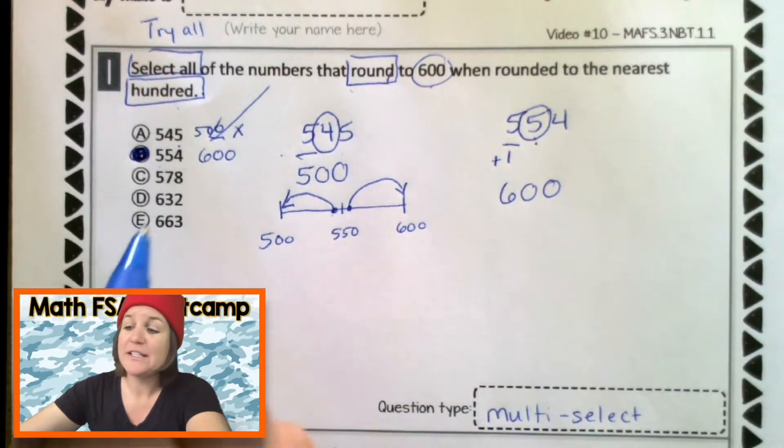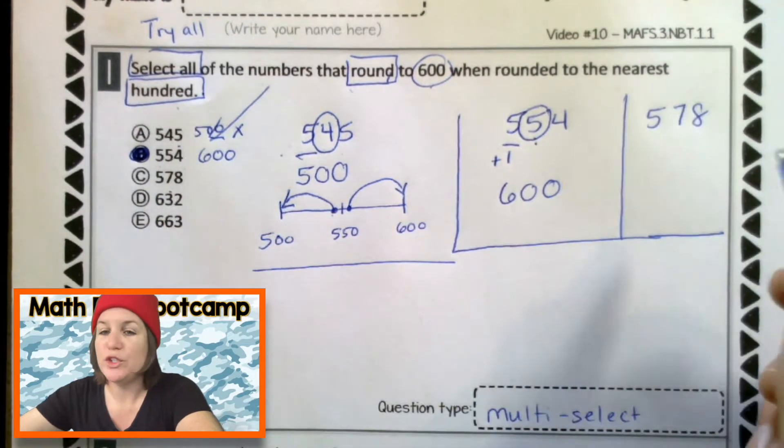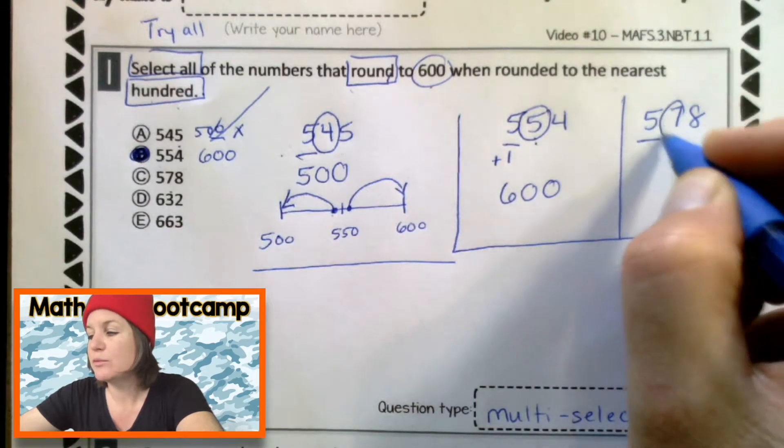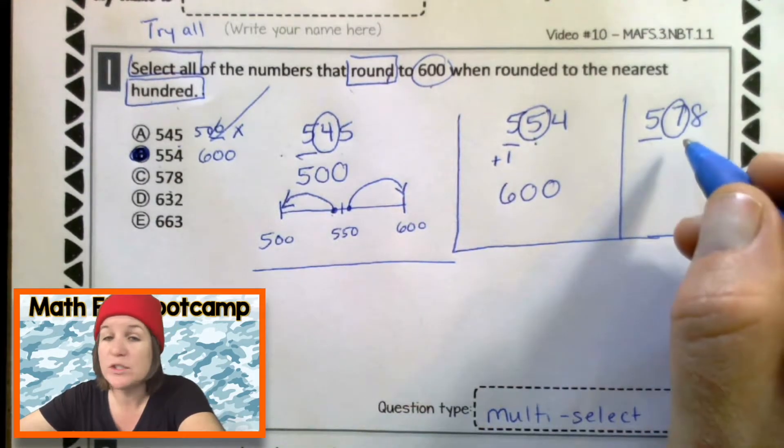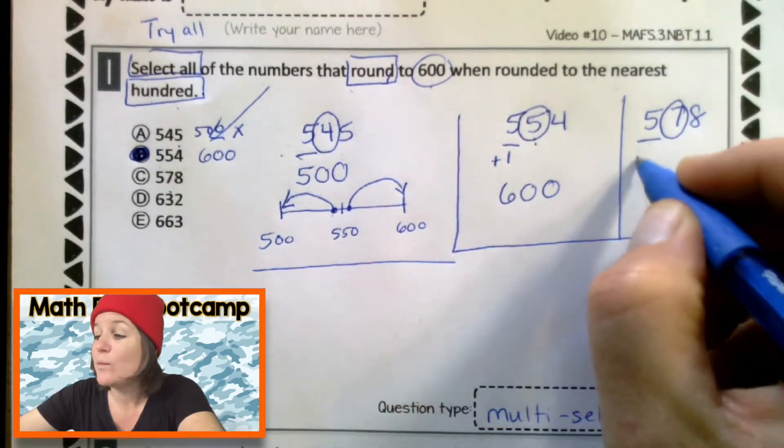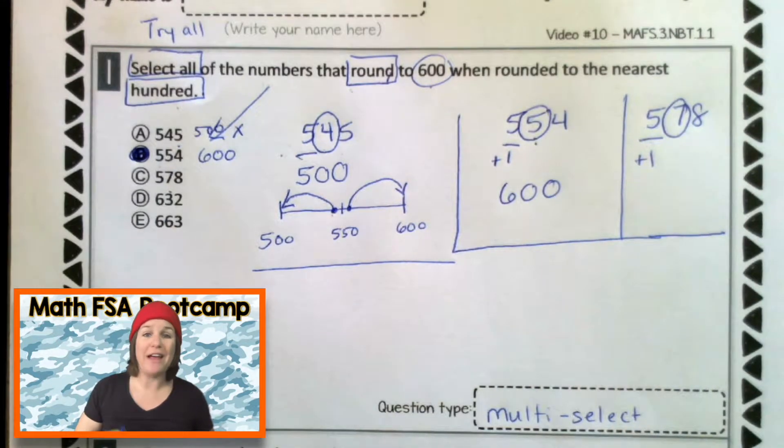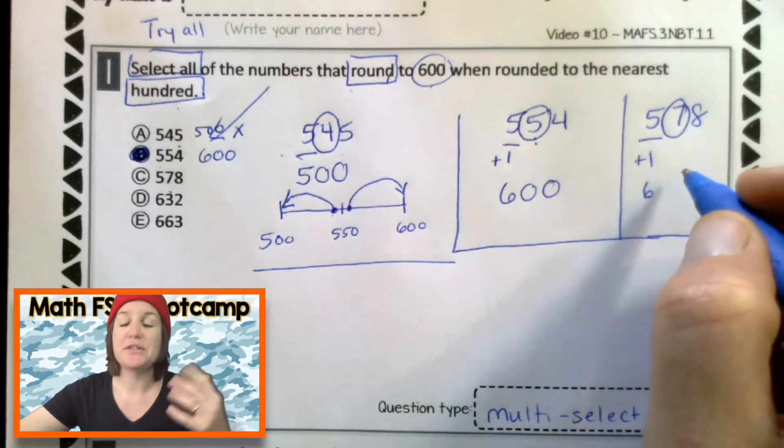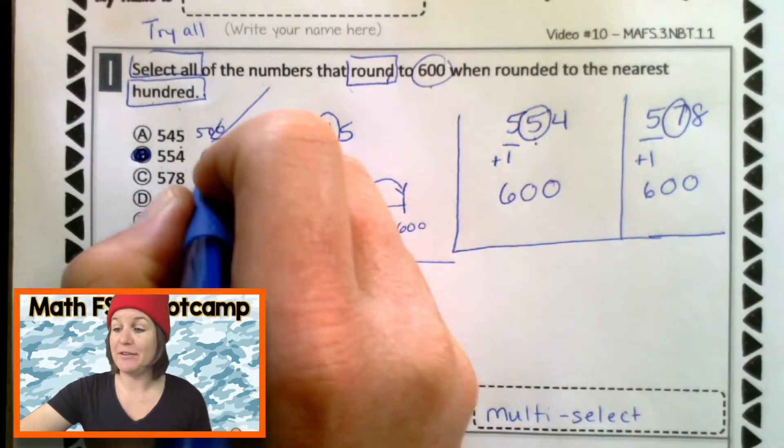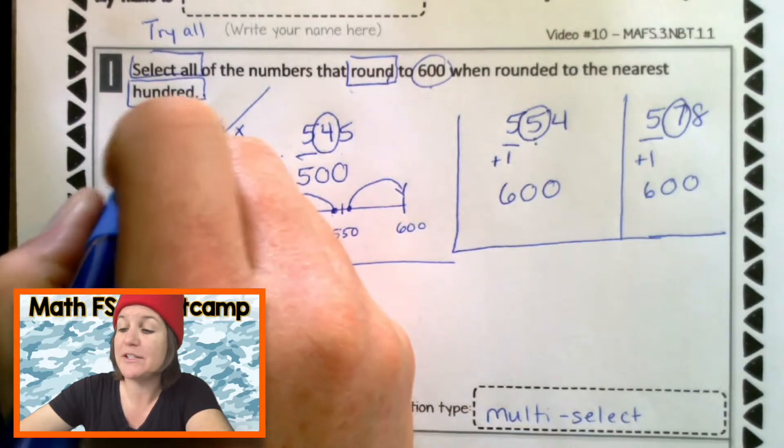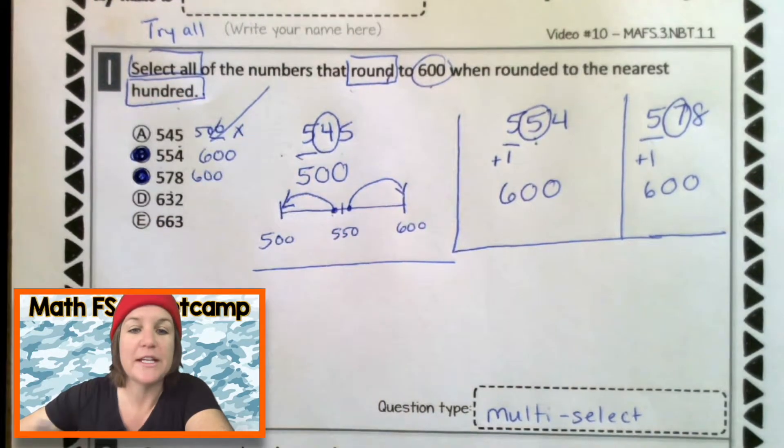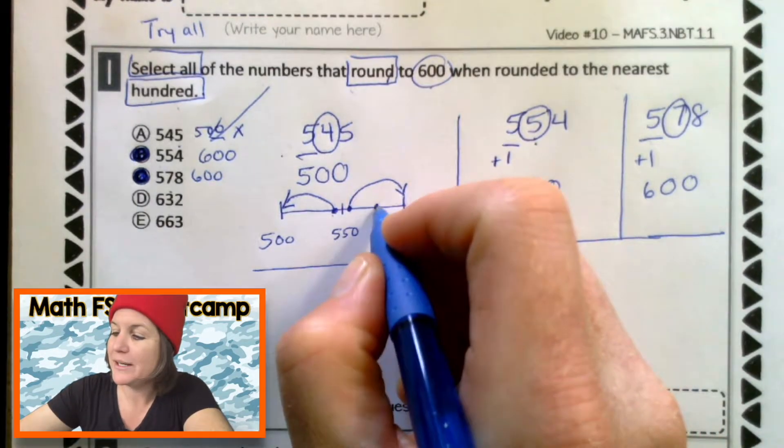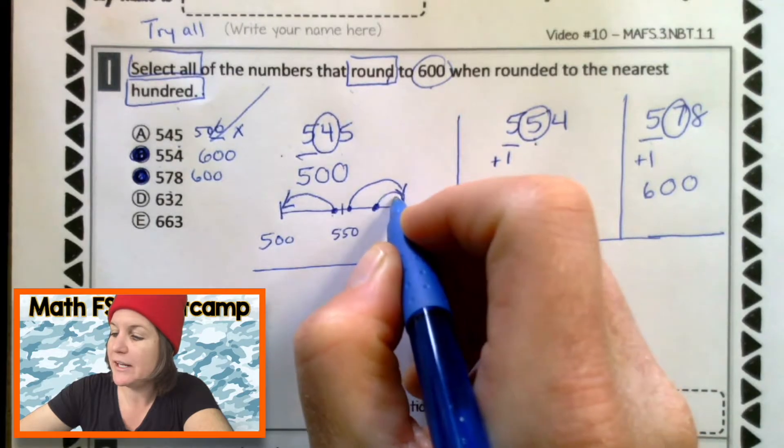Now, 578. When you round find and underline the place that they told us. Spotlight to the right, decide the digits fate. This is 7, which is 5 or more. So, we add 1 to the rounding place. Let's take care of that right here, right now. What is 5 plus 1? 5 plus 1 is 6. And that is one of our answers. 578 is 600 when we round it to the nearest hundred. So, let's mark C as well. According to our number line, 578 would be like about right here. Which makes sense that we would round it up to 600.